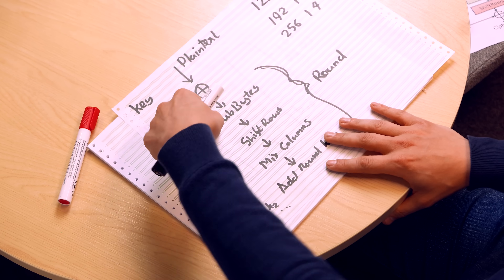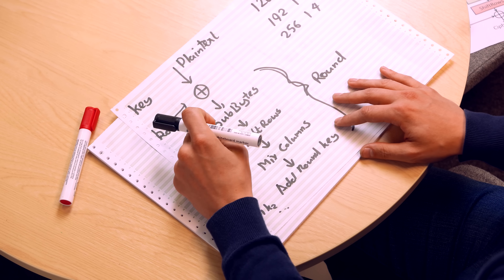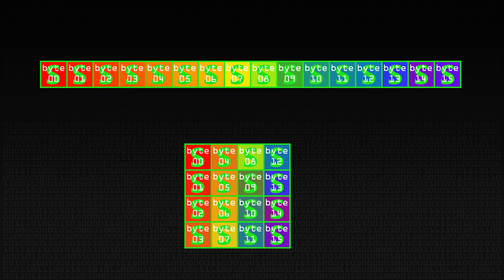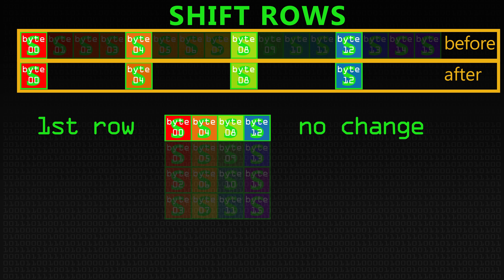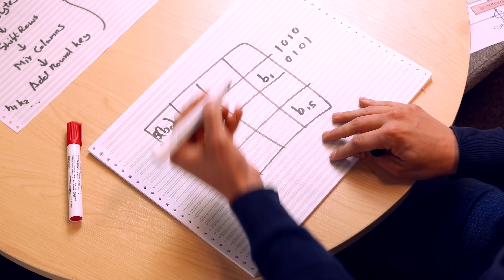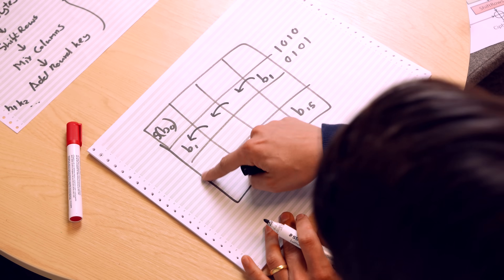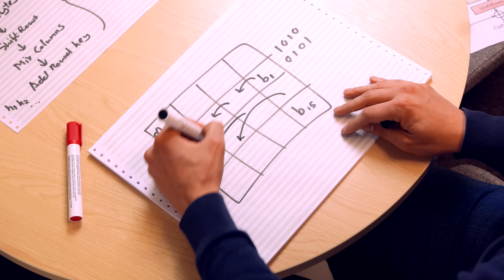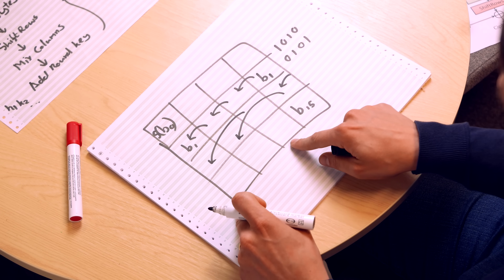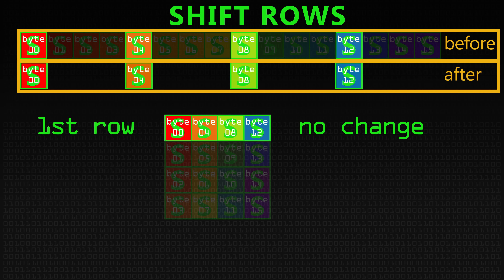We've substituted our bytes — taken our plain text, put in part of our round key, and at the beginning of the round made some byte substitutions using the S-Box. Then we're going to shift the rows. We take the first row and do nothing to it. We take the second row and move it one to the left, so B1 wraps around. The third row moves two positions, and the fourth row moves three positions — which is another way of saying it moves in the other direction. So bytes from one column are being placed into different columns.